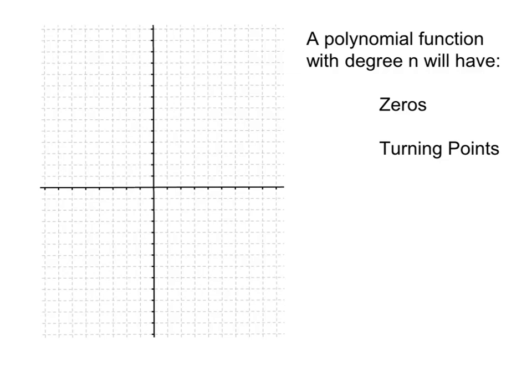If you know the degree of a polynomial function is n, then at most, your polynomial function can have n zeros. So if the degree is 5, your polynomial function can at most have 5 zeros. It might have 1, 2, 3, 4, or 5, but it cannot have more. It can have, at most, that number of zeros.